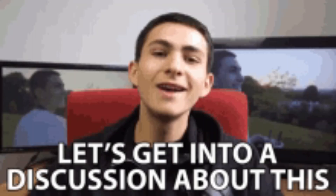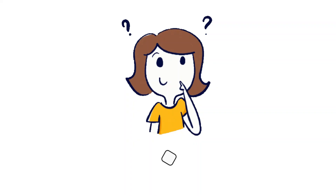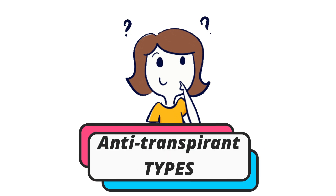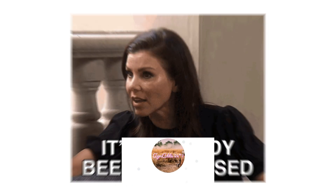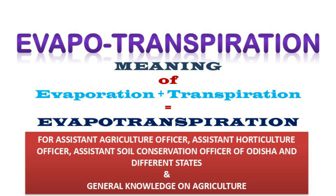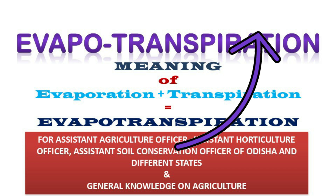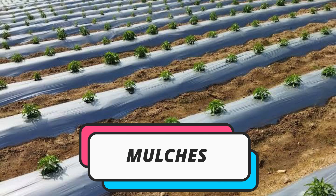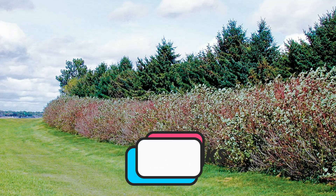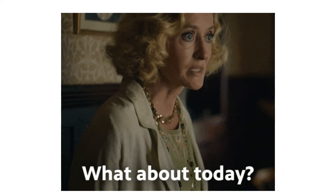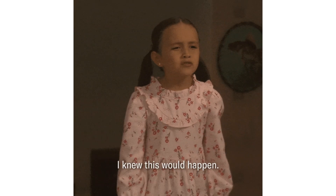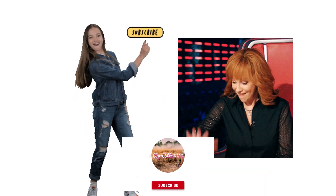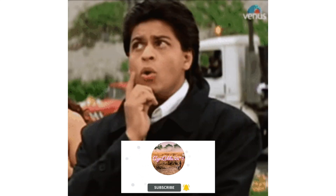Hello everyone. Today in this video we are going to discuss about what is antitranspirant and what are the different types of antitranspirants. Previously we have discussed about evapotranspiration and how evapotranspiration can be reduced. We knew that evapotranspiration can be reduced by mulches, antitranspirants, and windbreaks. Today in this video we are going to cover the particular part that is antitranspirant.